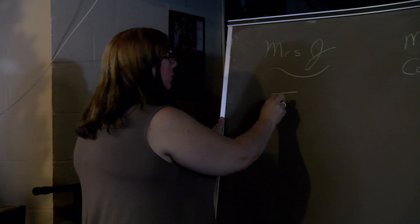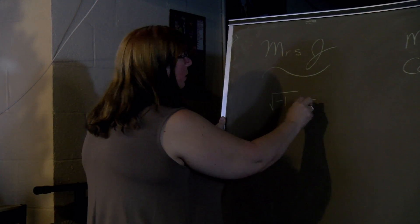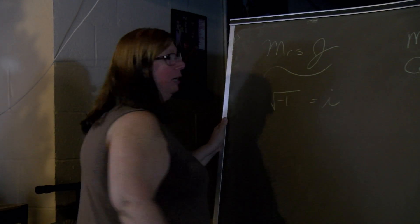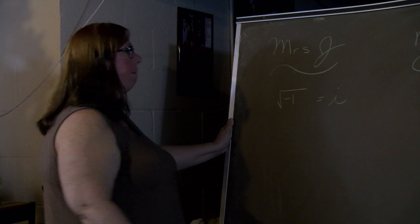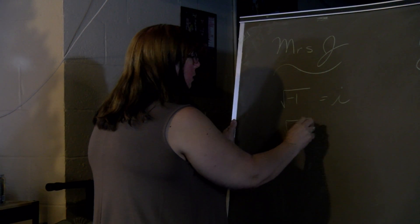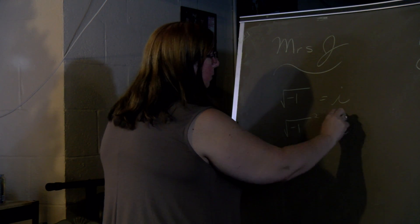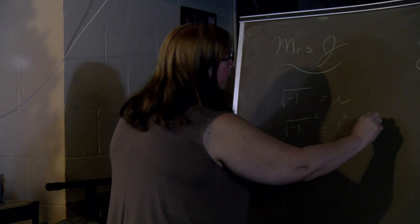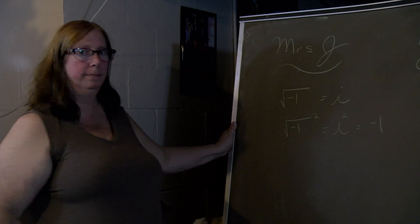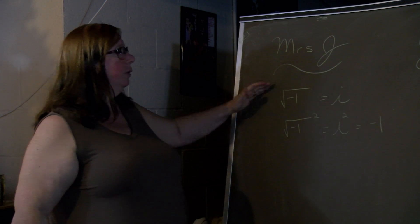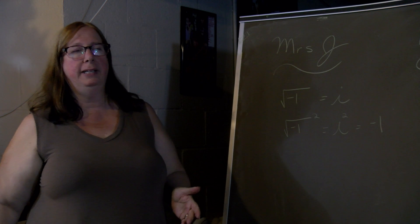So we have the square root of negative 1, that's our i. And if we square that, we get negative 1. So as long as you know these two, you can find any of them.